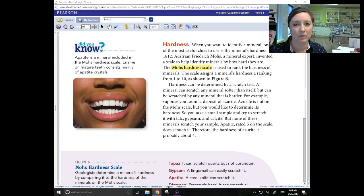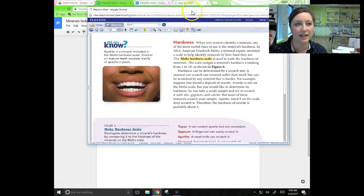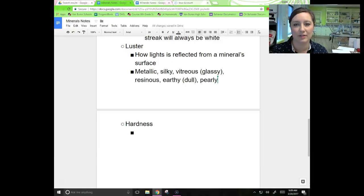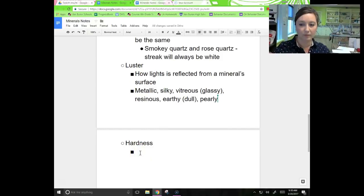When you want to identify a mineral, one of the most useful clues is the mineral's hardness. In 1812, Austrian Friedrich Mohs, a mineral expert, invented a scale to help identify minerals by how hard they are. The Mohs hardness scale is used to rank the hardness of minerals. The scale assigns a mineral's hardness a ranking from 1 to 10. We all know it's how hard a mineral is.